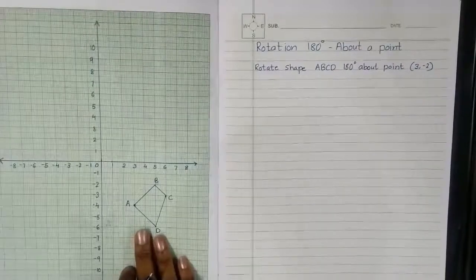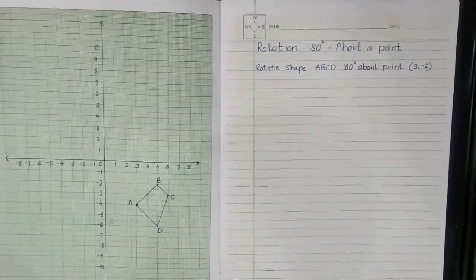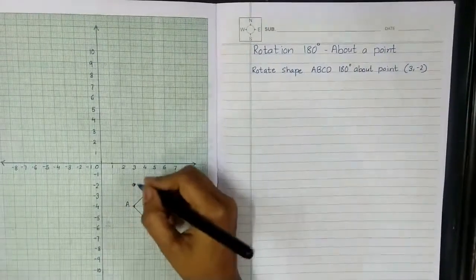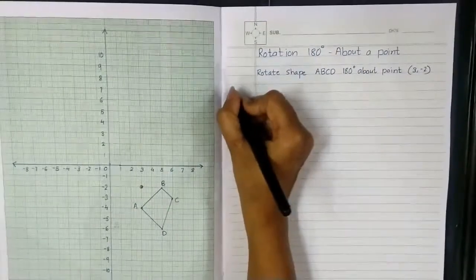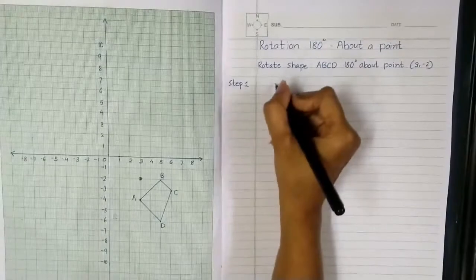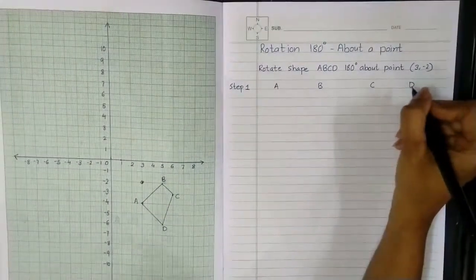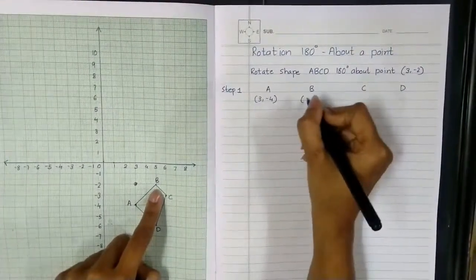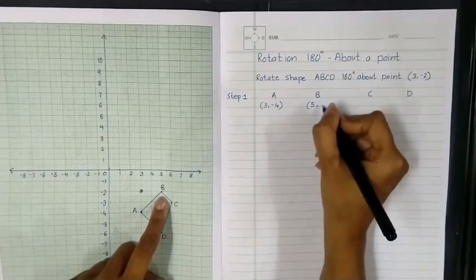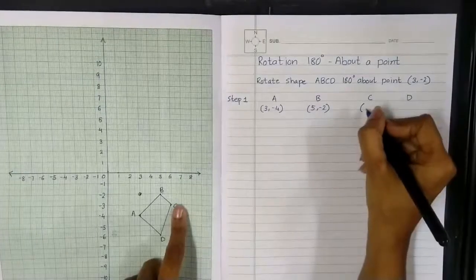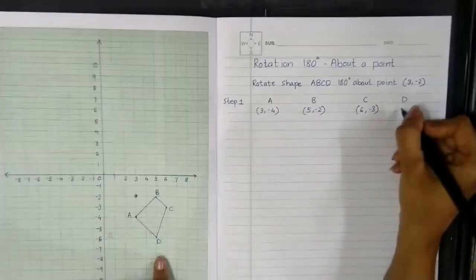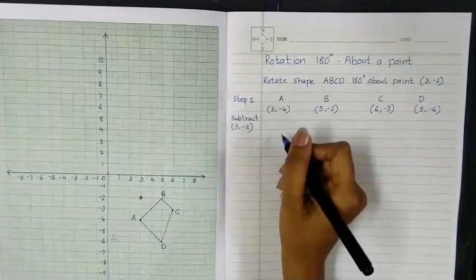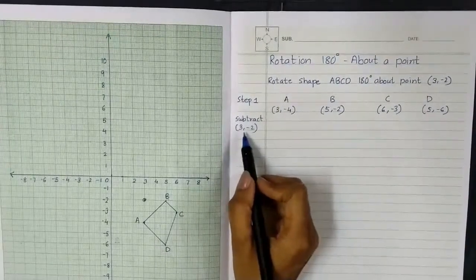Shape ABCD is already drawn here. We'll first mark the center of rotation, which is (3, -2), about which we have to rotate the figure. Step number one: write the coordinates of A, B, C, D. Coordinates of A are (3, -4), coordinates of B are (5, -2), coordinates of C are (6, -3), and coordinates of D are (5, -6). After that we subtract the given point (3, -2).